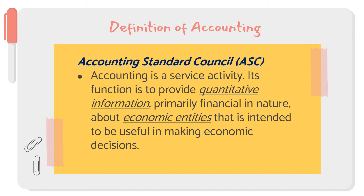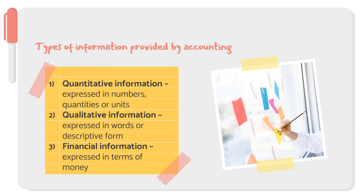First, let's look at the statement that accounting is a service activity. In the operations of businesses — whether service, merchandising, or manufacturing — since you use your service in order to perform accounting, that's why it is called a service activity. Its function is to provide quantitative information. Accounting provides three types of information: quantitative information, qualitative information, and financial information.